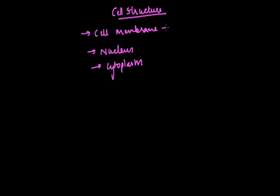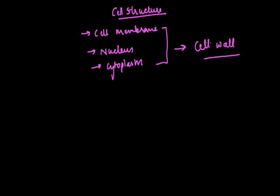Besides this, plant cells have a cell wall in addition, which is very rigid and which is for support. Now let us first discuss something about the cell wall.